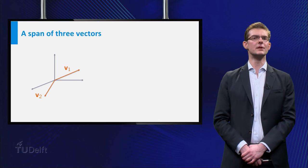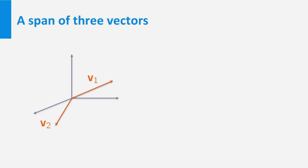Here you see the vectors V1 and V2 from the second example. The vectors V1 and V2 together span a plane. Now let's add the vector V3 to the picture.